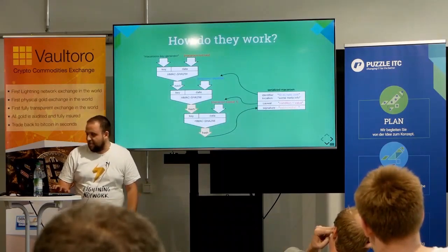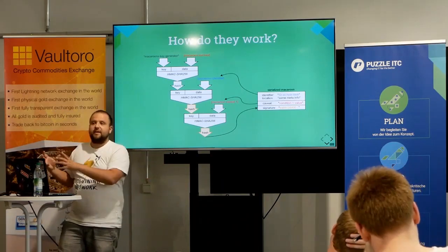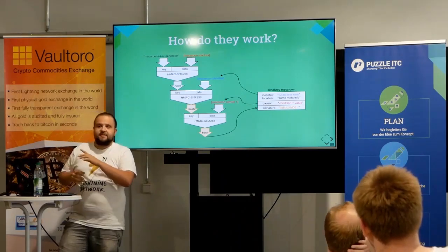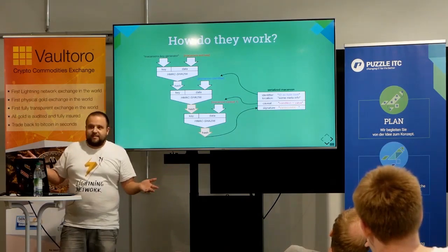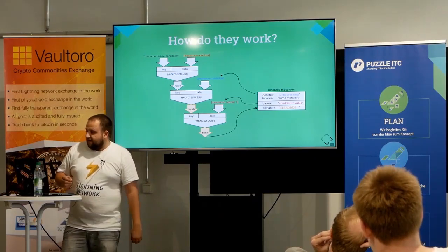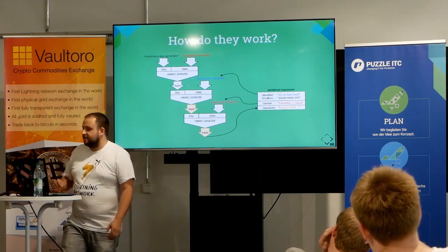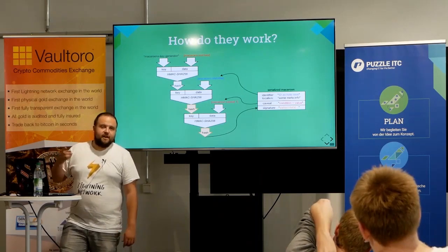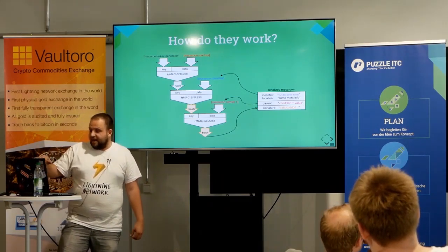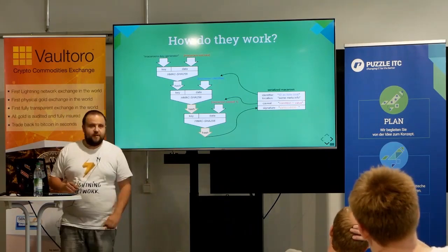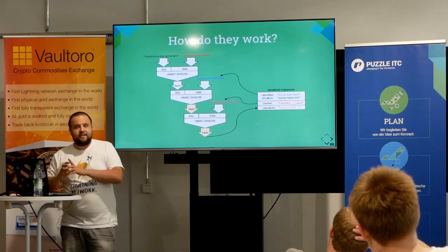Let's see an example. The left side is what actually happens with the HMACs, and the right side is what is in the macaroon you get. So if you get this binary blob, it's just a serialized version of what you see on the right. We have this identifier — it's just a blob of bytes that is basically signed in the first step. There's also some meta information like the location, which could be a URL for the endpoint that issued it. This is never taken into a signature — it's really just meta information. And then I can add caveats. For every caveat I add a new level of HMAC, and I only ever publish the last signature serialized into the macaroon.